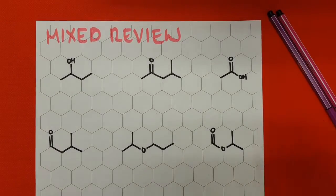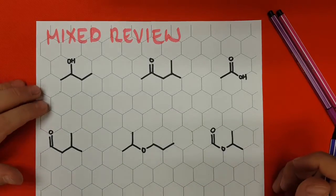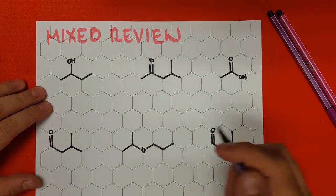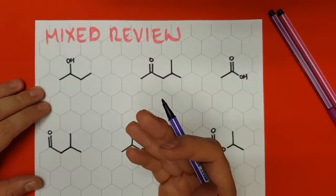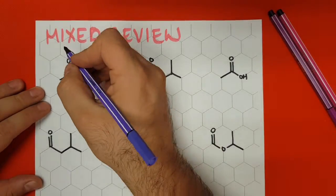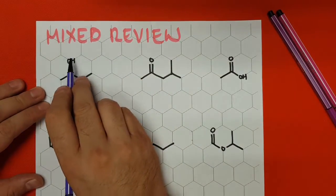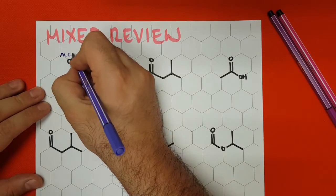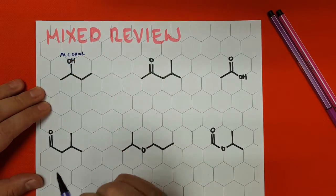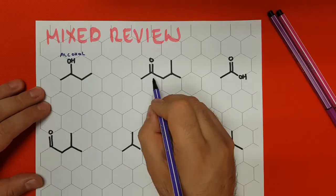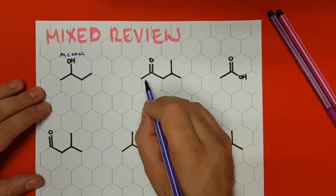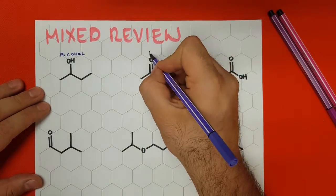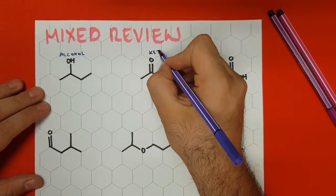The first thing we have to identify is exactly what we're dealing with. So even if the exam doesn't ask for this, let's try to analyze what we're looking at. Here we identify off the bat a hydroxy group — this is an alcohol. And then this one, we look at it: it's a carbonyl group in the middle of a chain, so we can identify it as a ketone.